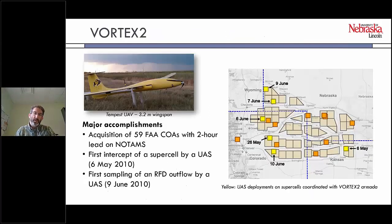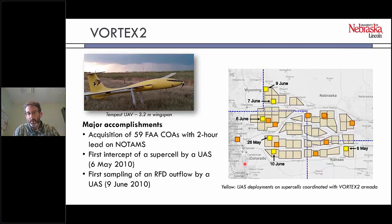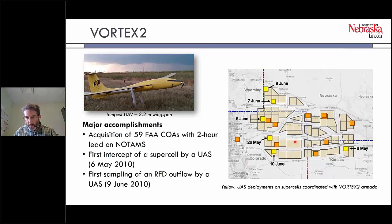In Vortex 2, we used the Tempest UAV, a 3.2-meter wingspan fixed-wing aircraft. The major accomplishments were that we were able to do it — getting FAA permissions was a huge obstacle — and we were able to intercept a supercell with the UAS and collect data across the rear-flank downdraft outflow. These polygons show the operations we could conduct during Vortex 2; we couldn't operate anywhere else within the Vortex 2 domain.